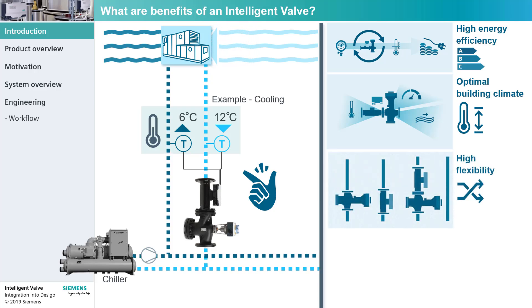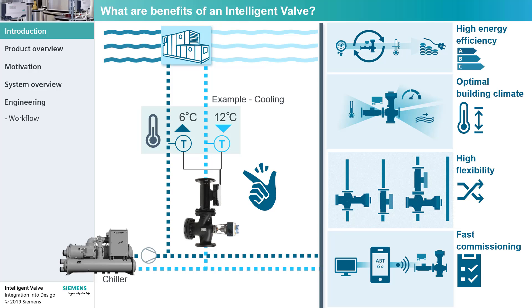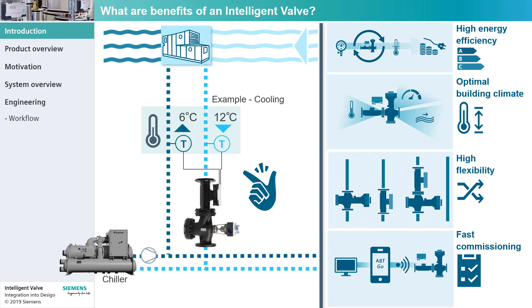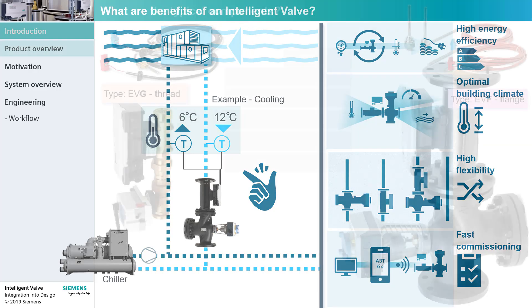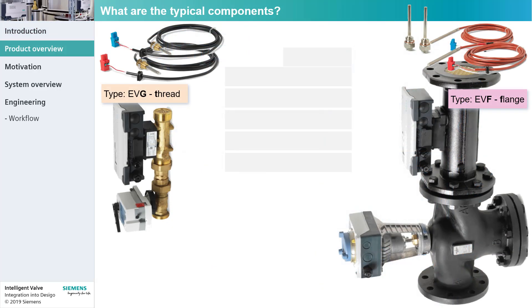It offers flexible installation options and fast commissioning. Two types of Intelligent Valves — Flange and Thread — with a range of dimensions are available to perfectly meet the customer job site specification.